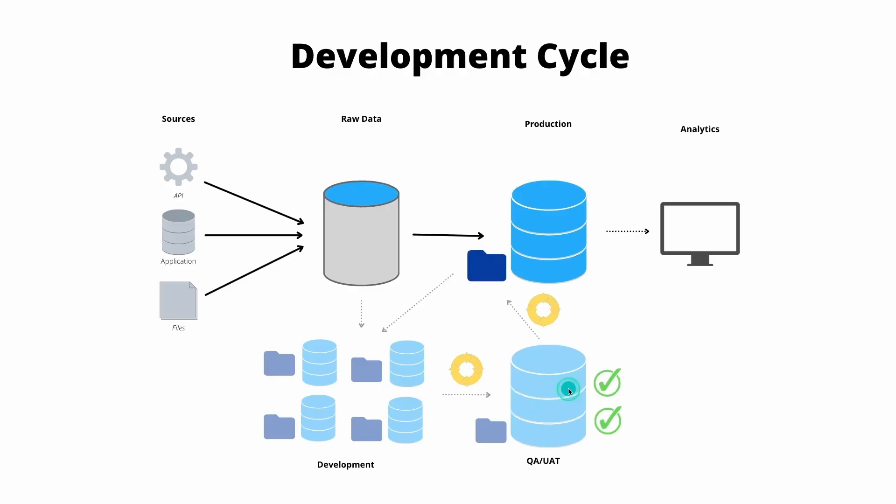A critical process for every data team is how they deploy their changes to production. And if you go a little deeper, the real reason that's so important comes down to confidence — not only the confidence in yourself and your team that you're creating something valuable, but more importantly, the confidence that your stakeholders and the business have in the data you're giving them. For everybody outside the team, it's a black box, and so they're relying on you to have processes to make sure things go smoothly.